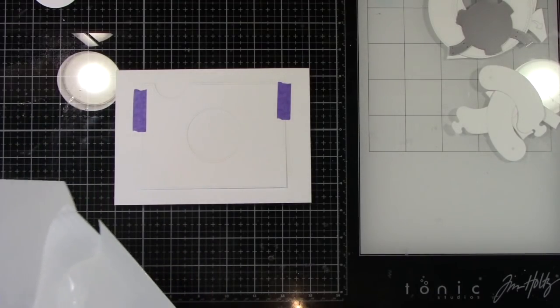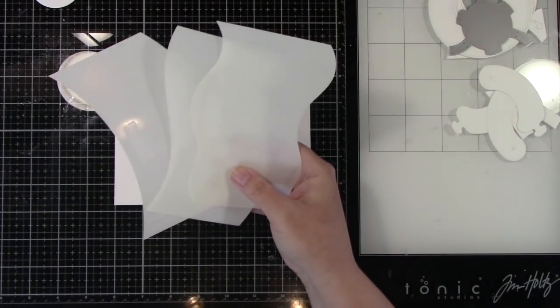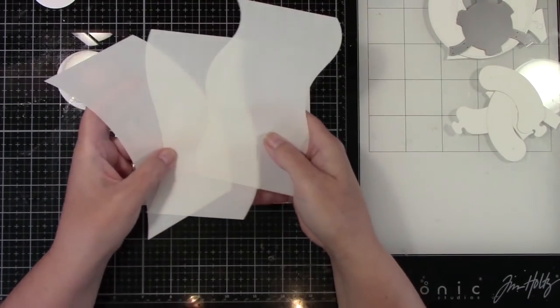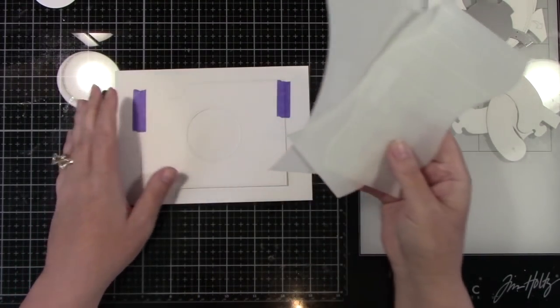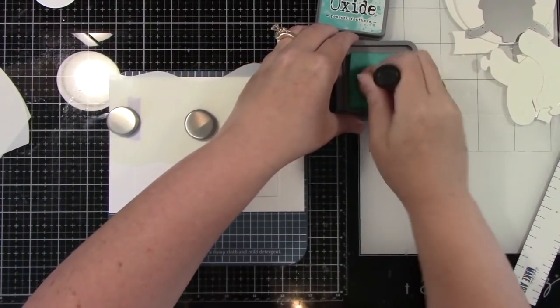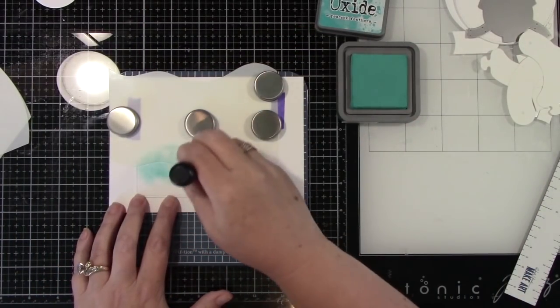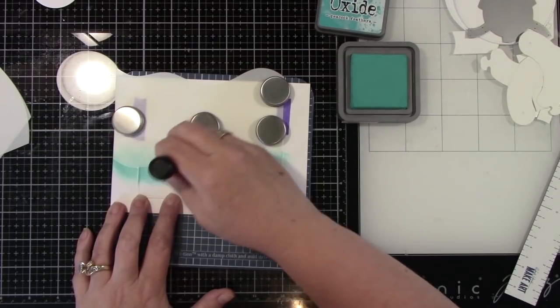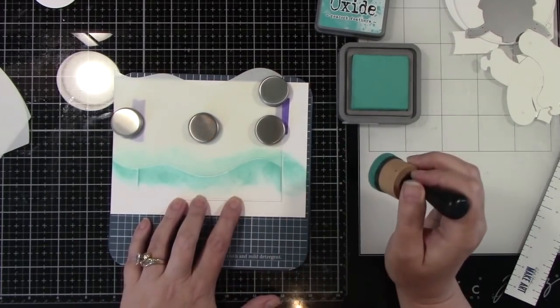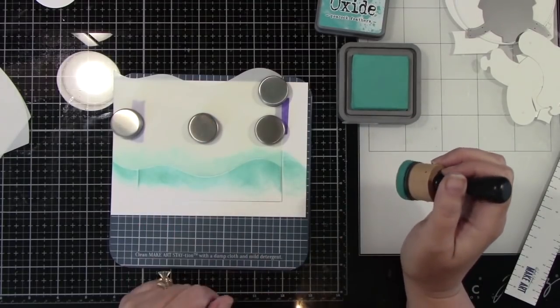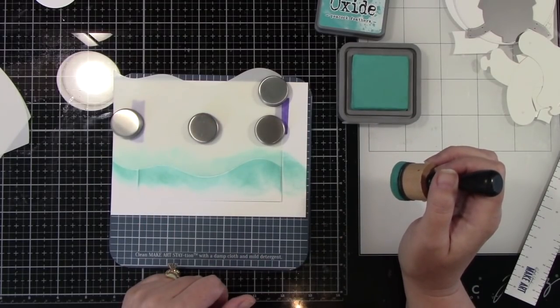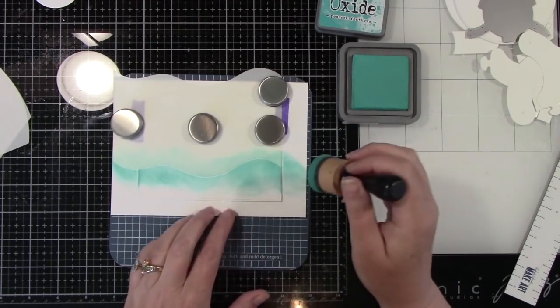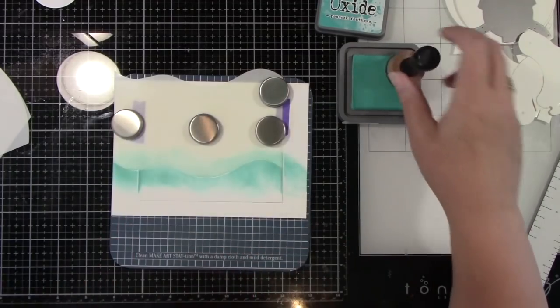The stencils that I'm using are the hillside stencils, but I'm going to be using them for waves instead of grassy hills. So I have got them placed upside down, basically, and I'm holding them in place with some magnets and I'm starting some ink blending. This color that I'm using is Peacock Feathers Distress Oxide Ink and I'm inking at the top part of the waves.